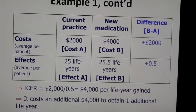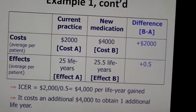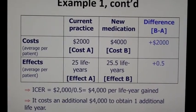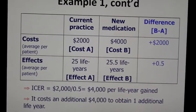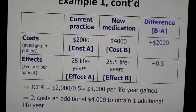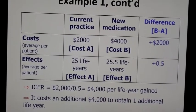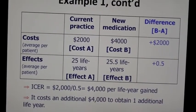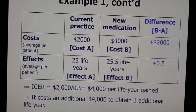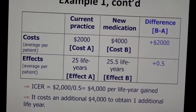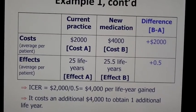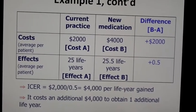Once we have the costs of B versus A, we can calculate the ICER. It is very simple: we take the difference in costs in the numerator divided by the difference in effects in the denominator. In this case, it's $4,000 per additional life year gained.